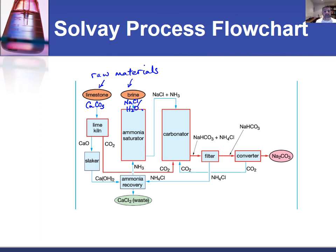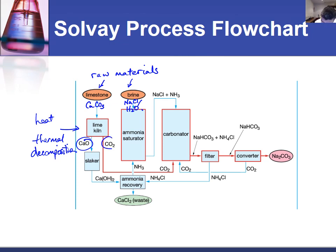The first thing we need to do is heat up the limestone. It's a thermal decomposition reaction, and that gives us calcium oxide as a product and carbon dioxide. The carbon dioxide is recycled through the process, so we're not going to have too much of a problem with the implications of adding carbon dioxide to the atmosphere.